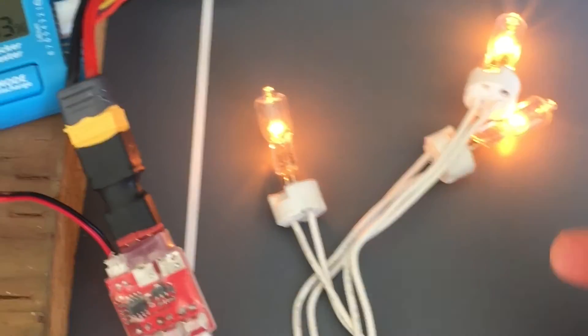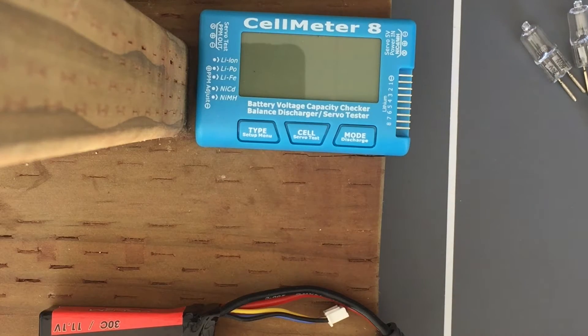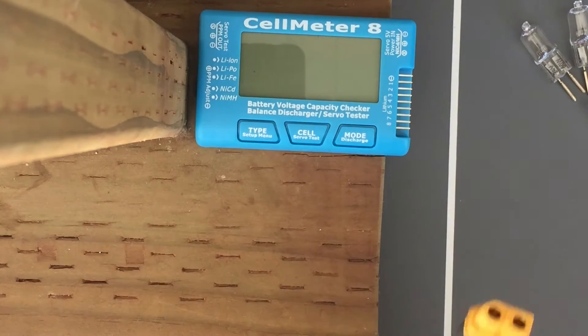I'll be doing a review of the CellMeter 8. You can buy this off Banggood for around $20. This is useful if you use LiPo batteries.